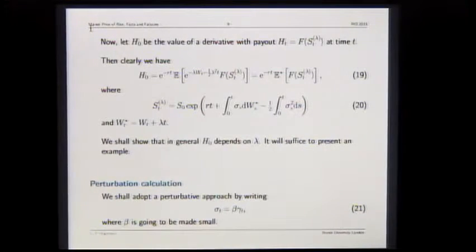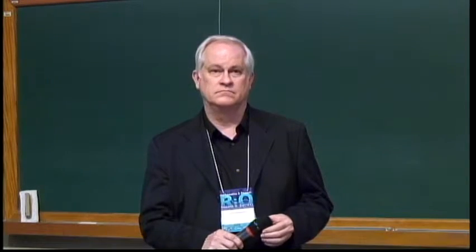Looking at slides 19 and 20, the price is given in slide 19 as an expectation under the measure P-star. In the measure P-star, W-star is a Brownian motion. So the price there is just a function of the Brownian motion W-star, and it doesn't depend on lambda. It seems like the price from slide 19 simply cannot depend on lambda, provided all the Cameron-Martin steps are valid. The price is an expectation of a function of the Brownian motion and all dependence on lambda has been removed.